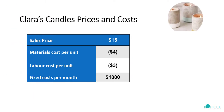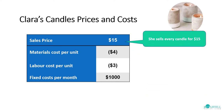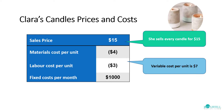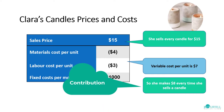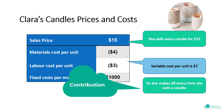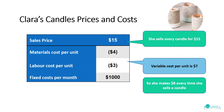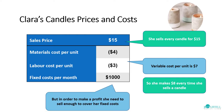Clara's candle prices and costs are as follows: she's selling them at $15, with total variable costs per unit of $7. This means she makes $8 every time she sells a candle. This is called contribution, and it means contributing towards your fixed costs. In order to make a profit, she needs to sell enough to cover her fixed costs of $1,000 a month.